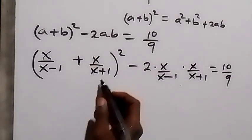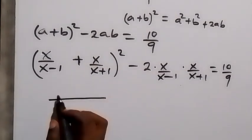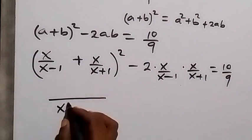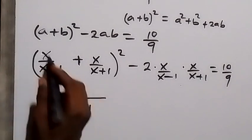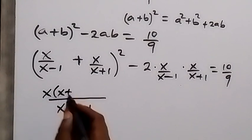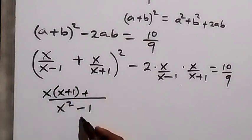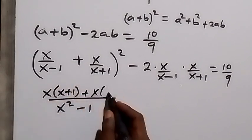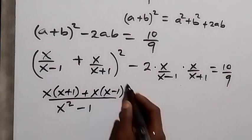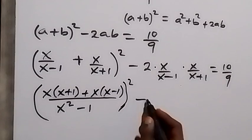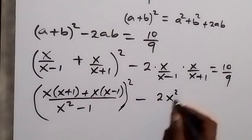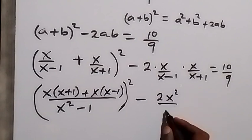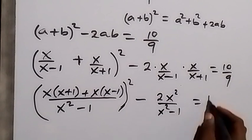Let's bring the bracket together as one. The LCM gives us x²-1. When x-1 goes across it gives x+1, so we have x(x+1). And when x+1 goes across it gives x-1, so we have plus x(x-1). Then that whole expression is squared. Minus 2 times x times x, that's 2x², divided by x²-1.